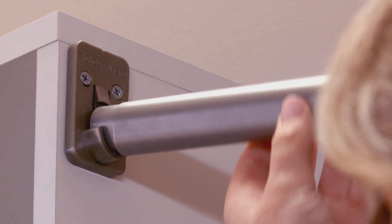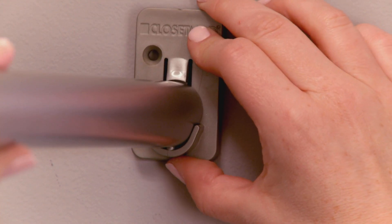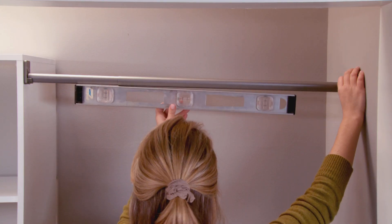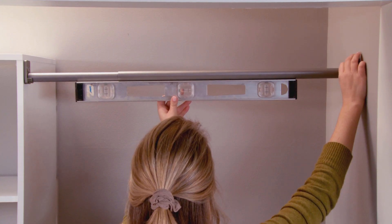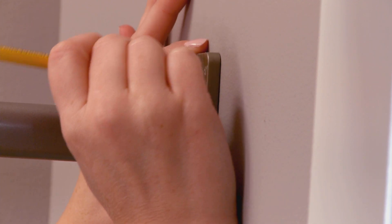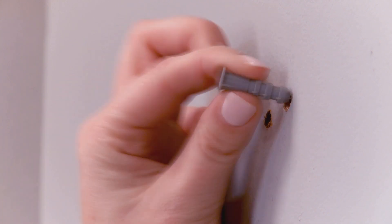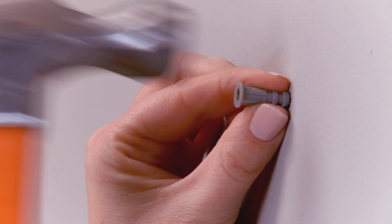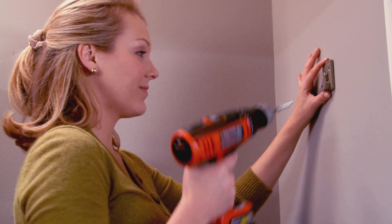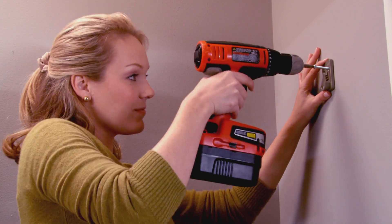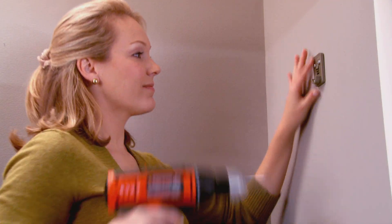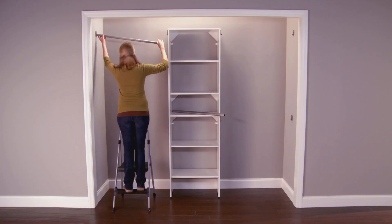Hook the closet rod onto the bracket. Extend the rod to the wall and hold another bracket in place. Make sure the rod is level and the same distance from the back wall as the bracket on the tower. And mark the hole locations on the wall. Repeat for all brackets. Drill one quarter inch holes at marked locations. Insert a wall anchor and secure brackets with wall screws. Install the closet rods into the brackets.